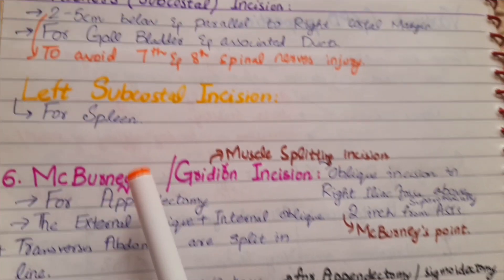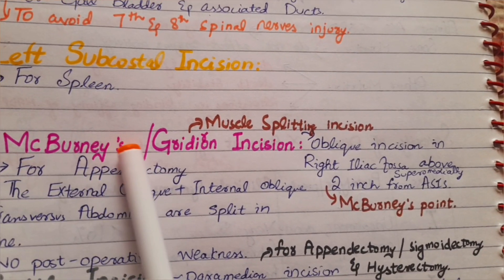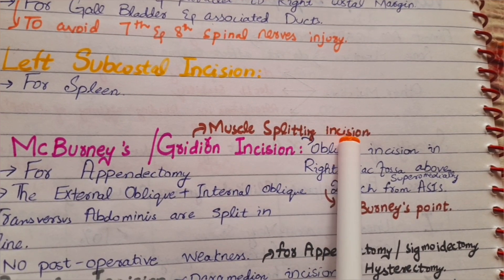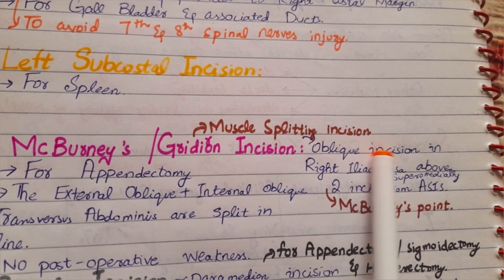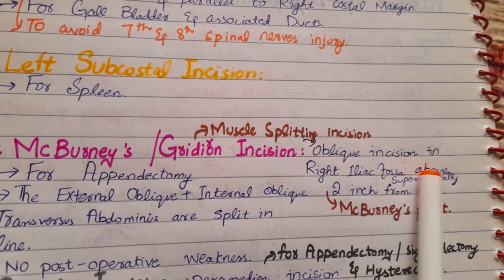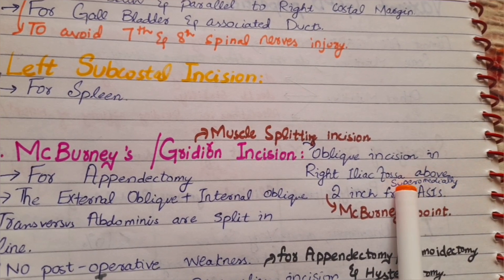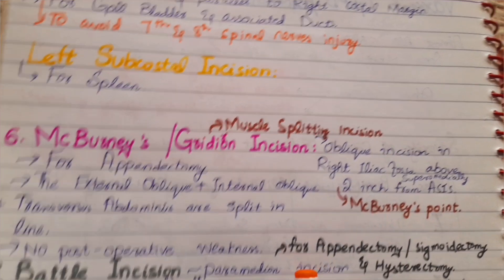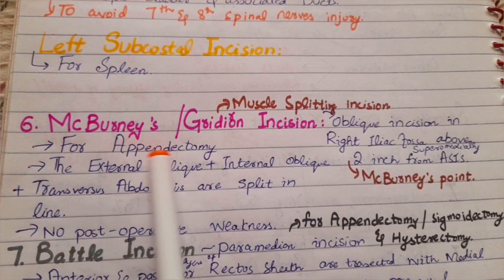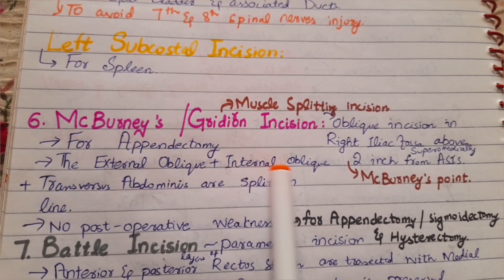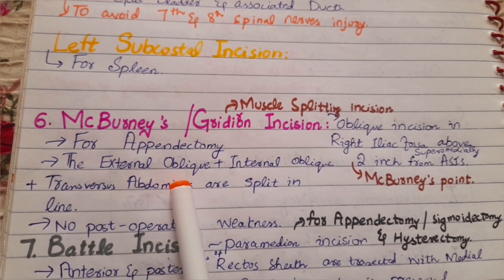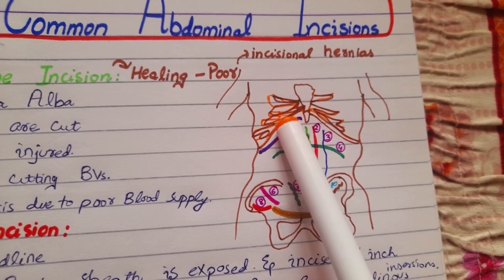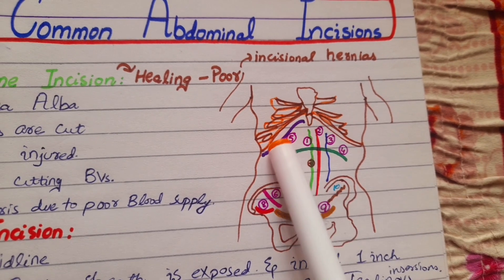Then we have the McBurney's or grid iron incision, also called the muscle-splitting incision. It is an oblique incision given in the right iliac fossa, two inches superomedially from the anterior superior iliac spine — this point is also called the McBurney's point. This incision is given for appendectomy. The external oblique, internal oblique, and transversus abdominis are all split in line, hence the name muscle-splitting incision, and there is no post-operative weakness.